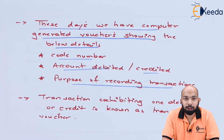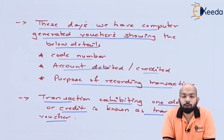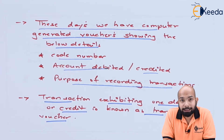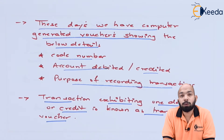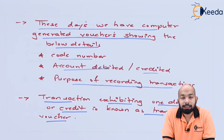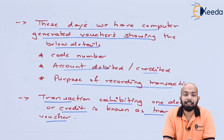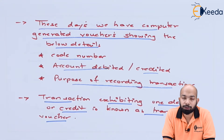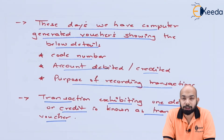When a transaction refers to only one specific item — either a debit or a credit — such vouchers are known as transactional vouchers. For example, if you purchase a computer, that transaction will have only a debit or credit: credit for the supplier and debit for you. Such a transaction is called a transactional voucher because there is just one specific transaction.